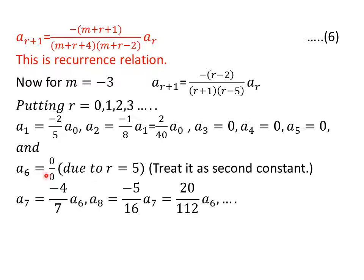So, we will not express a six in terms of a naught. Rather, we will represent the remaining coefficients a seven, a eight, a nine, etc. in terms of a six. So, a seven is equal to minus four by seven a six, a eight equal to minus five by sixteen a seven. Again, put the value of a seven and you get a eight equal to twenty upon one hundred twelve a six and so on.